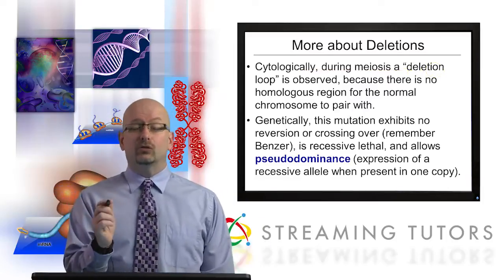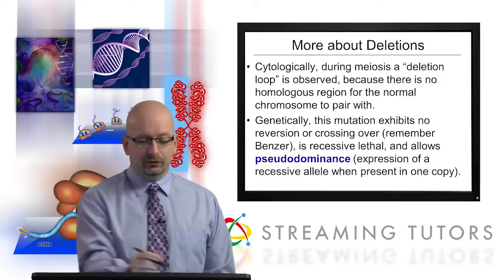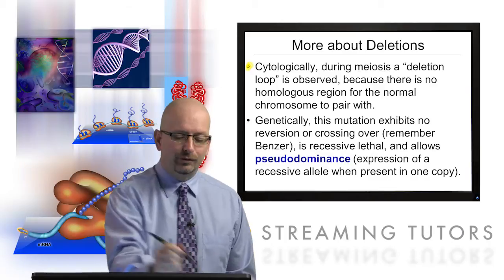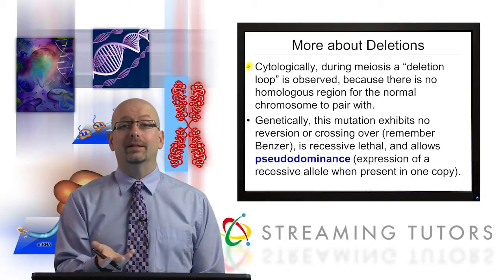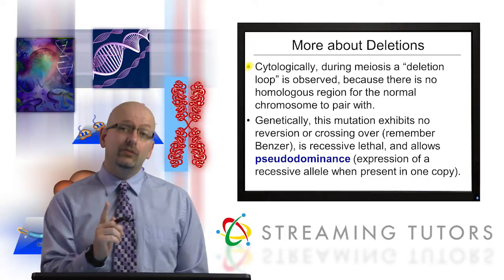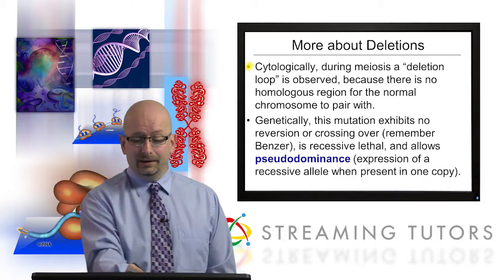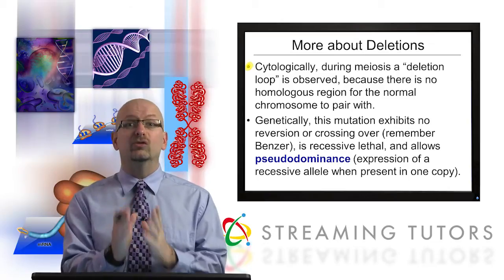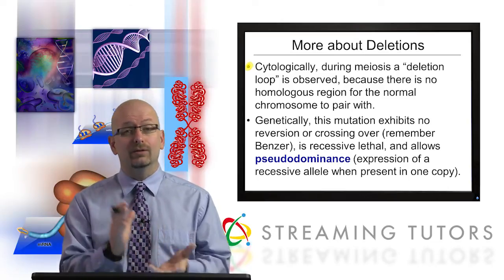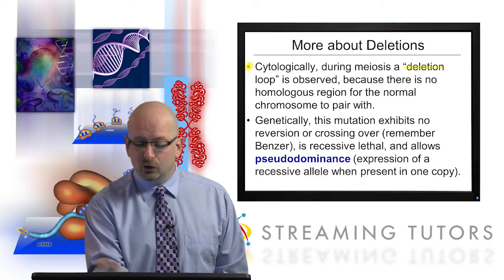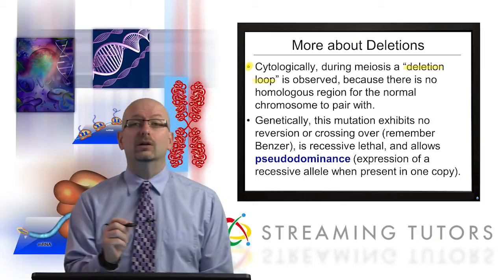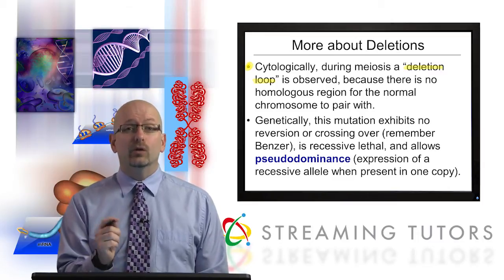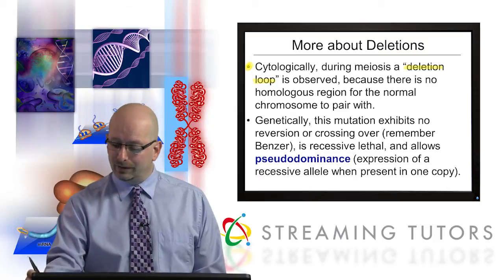Cytologically — meaning looking at chromosomes under the microscope — this is significant during meiosis. When you're making gametes, this is where we see a lot of interesting things going on with chromosomal rearrangements. You're going to observe a deletion loop, and the reason is because there's no homologous region for the normal chromosome to pair up with where the deletion is.